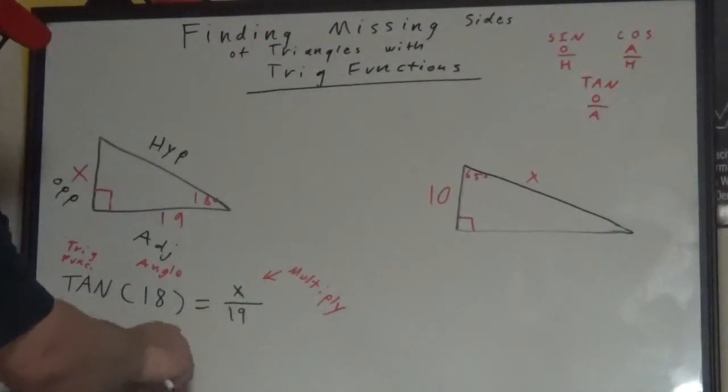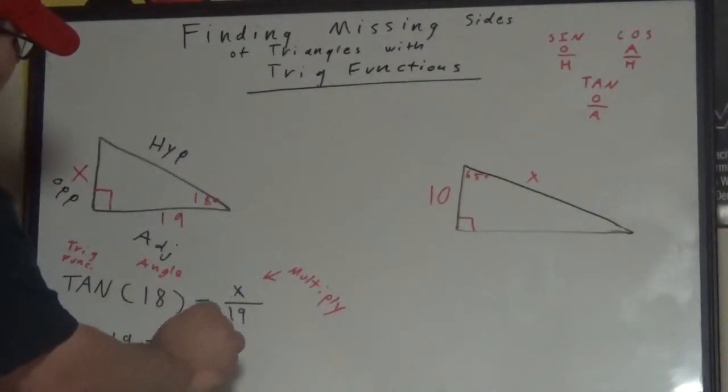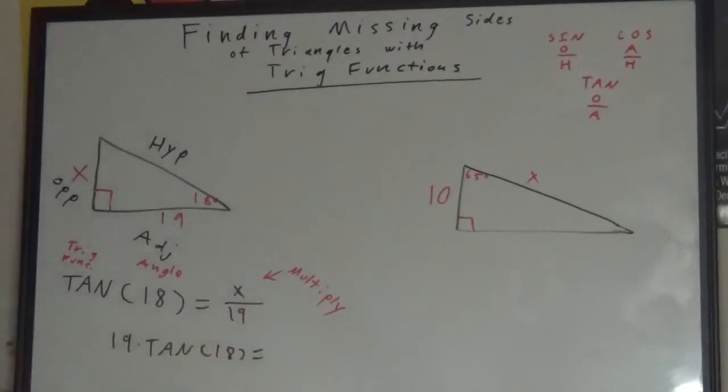And you set up, well, let me grab the 19 first. We're going to take our side measurement, 19, times tangent 18.